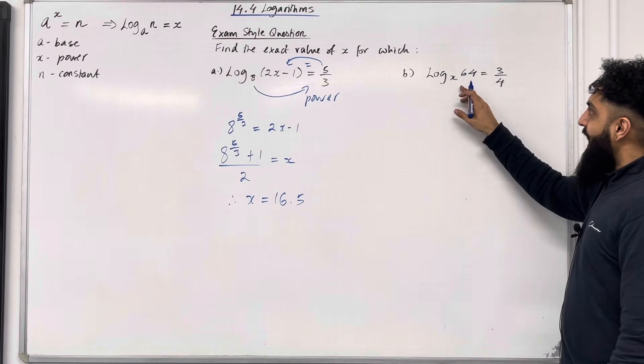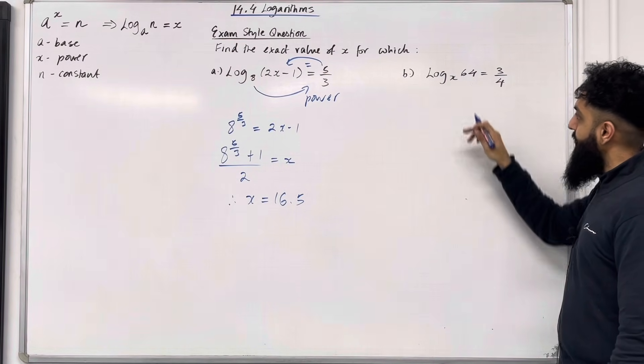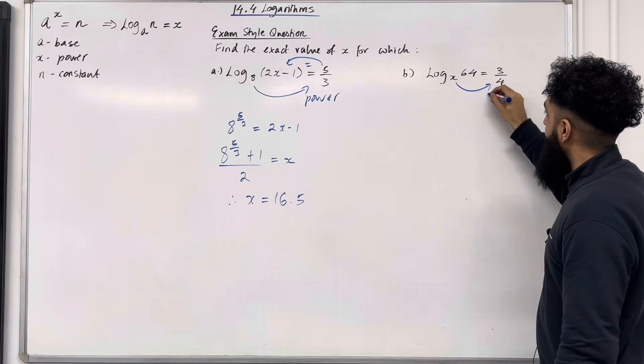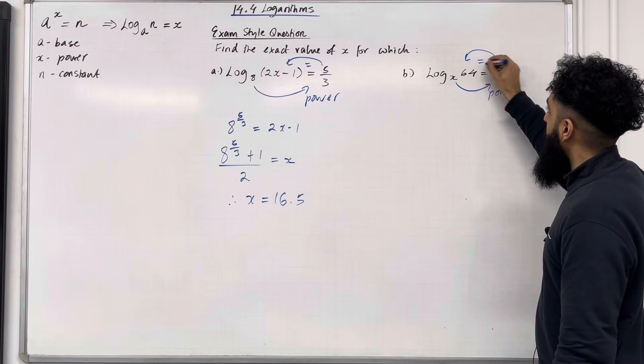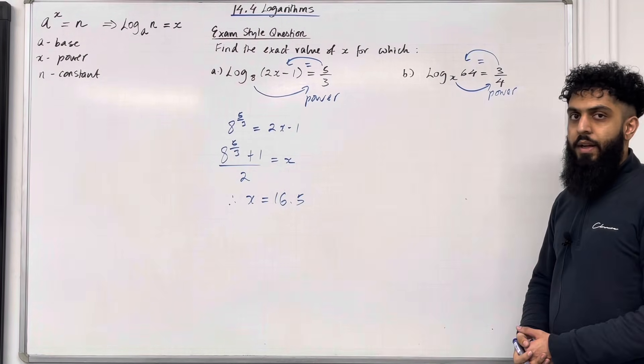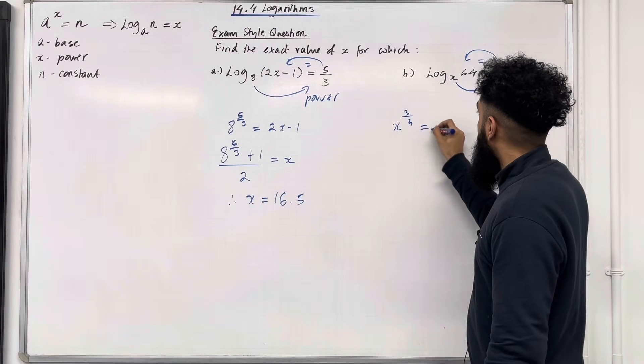Part B, log base x of 64 equal to 3 over 4. The base is x, so we can take x and raise it to the power 3 over 4, setting it equal to what we have inside the logarithm. So we have x to the power 3 over 4 equal to 64.